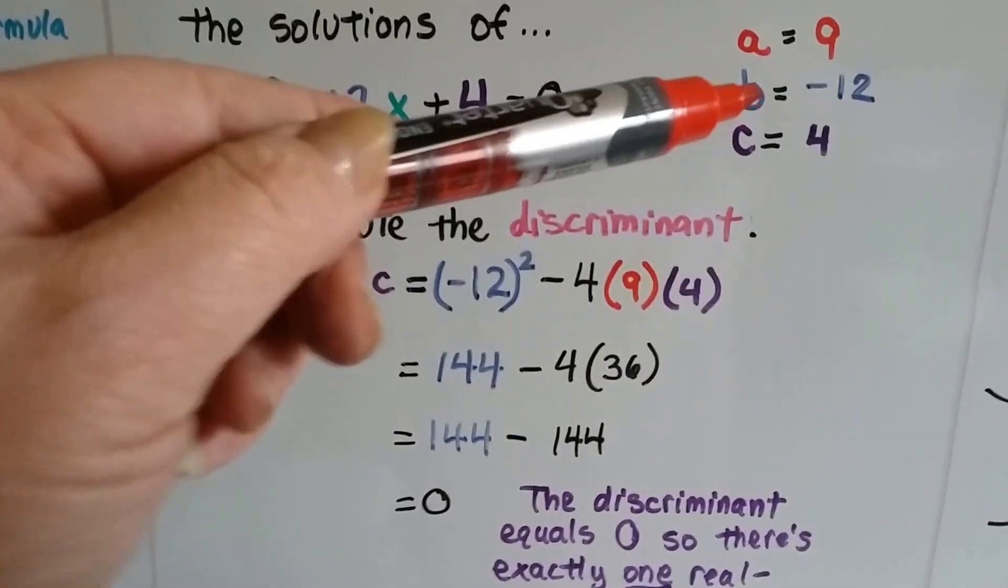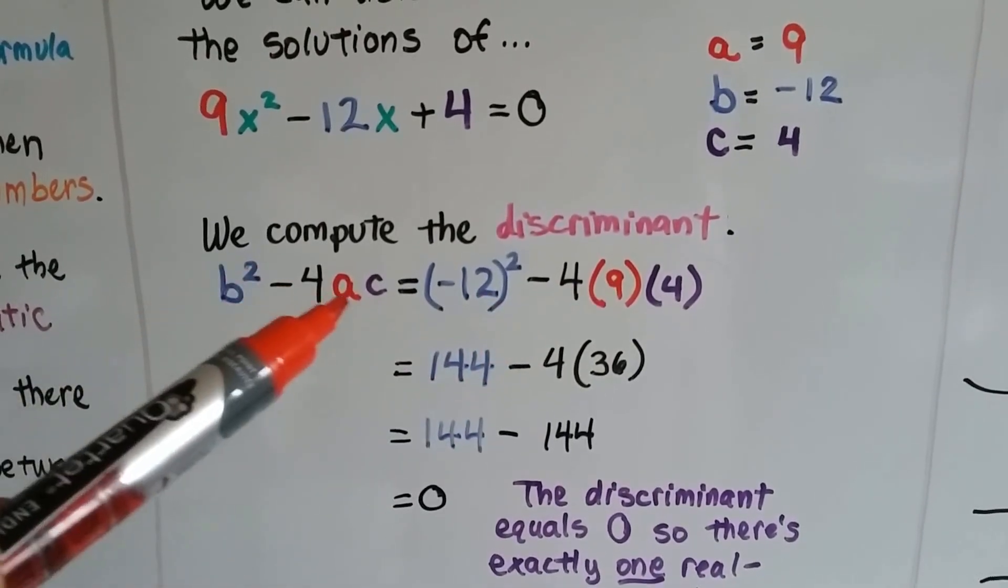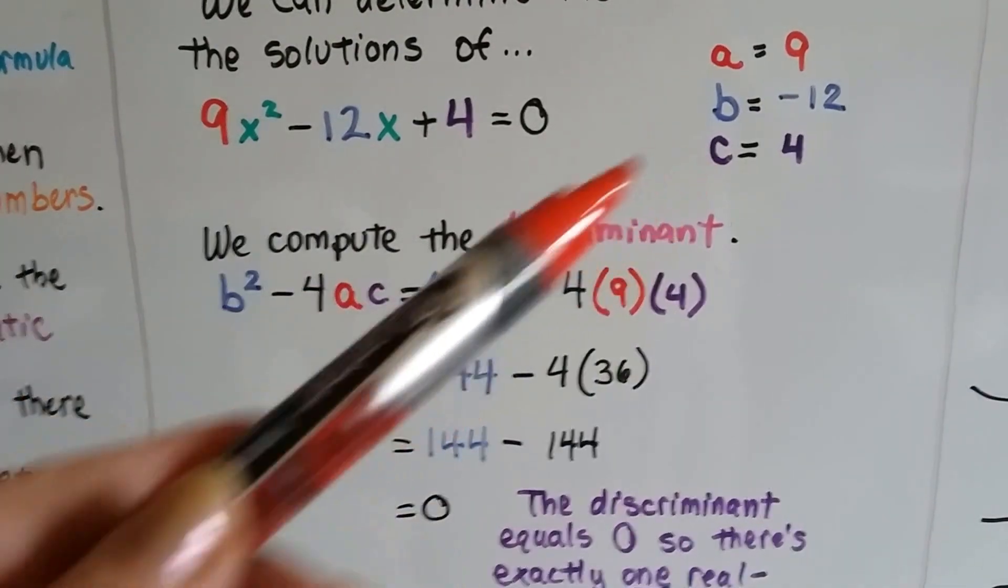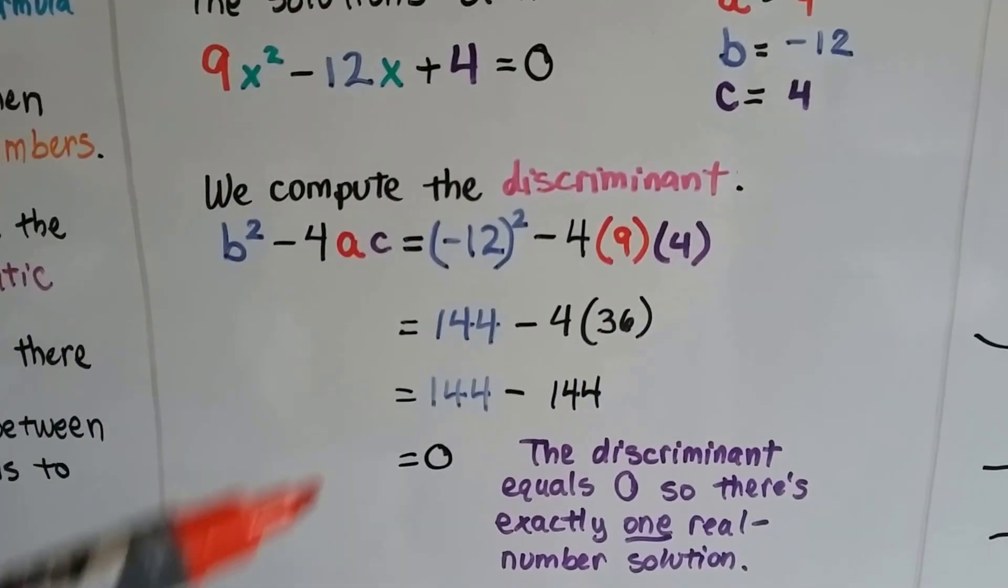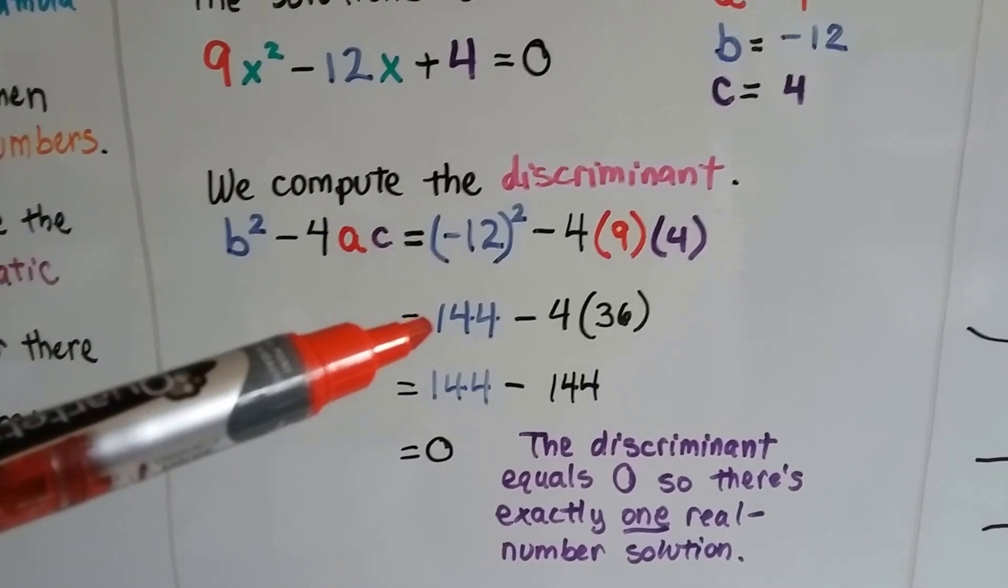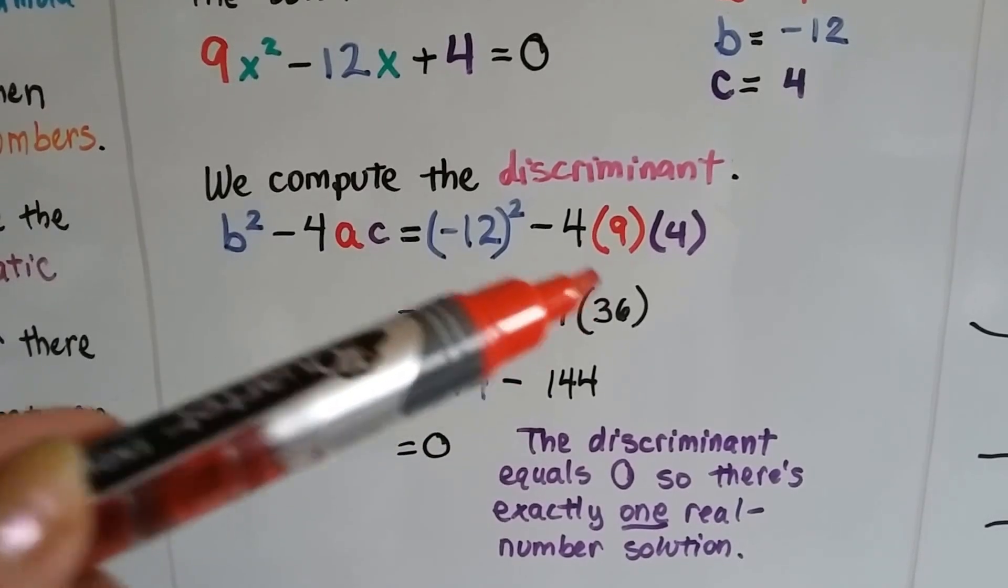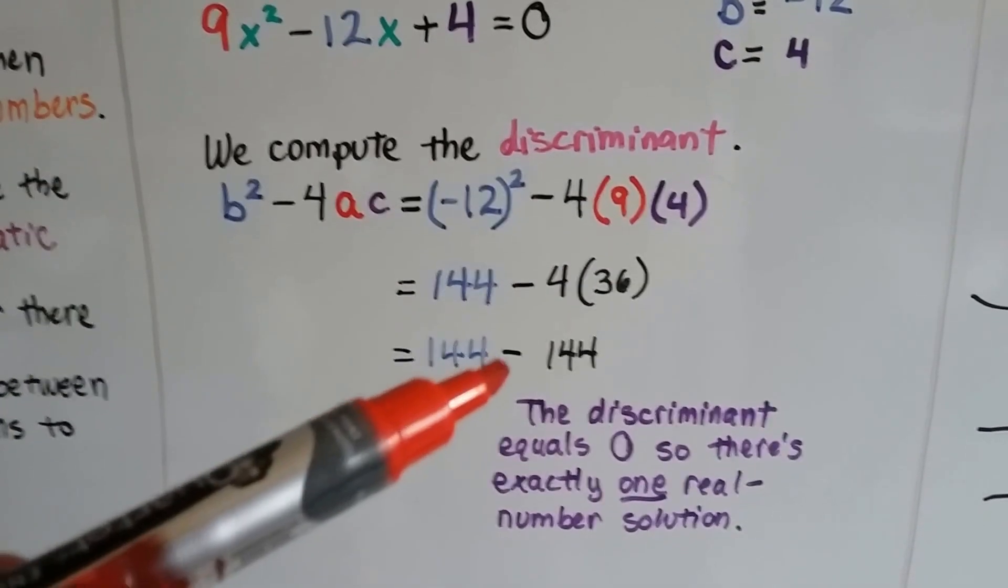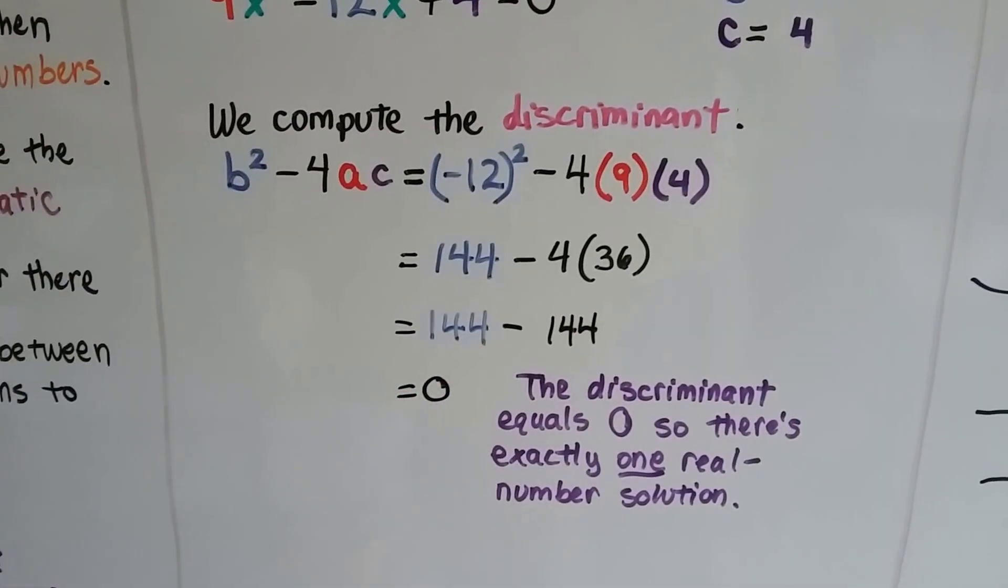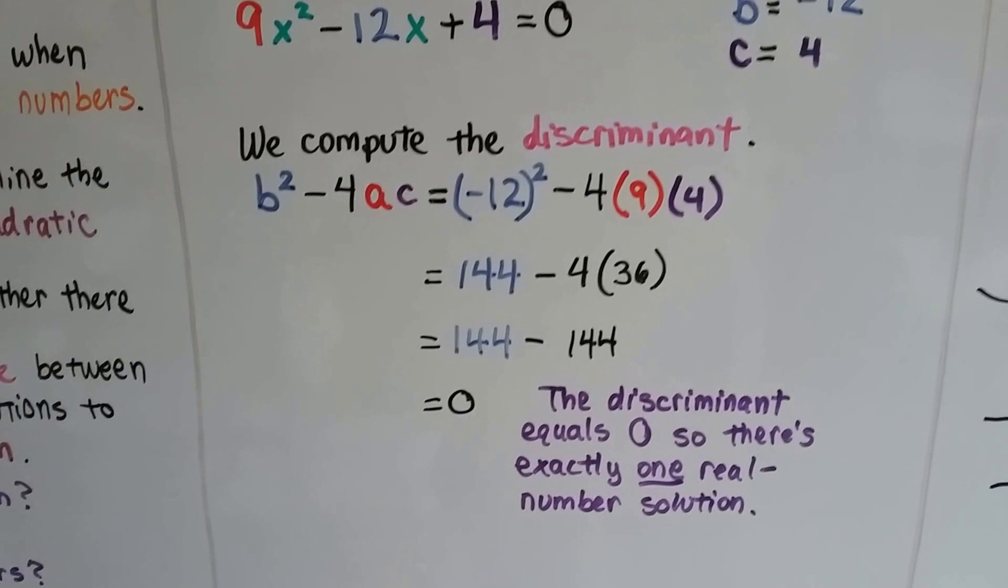Alright, so for b we had a negative 12. So that's going to go here and it's going to be squared. Then we have minus 4, and then we have to multiply a and c. And a is a 9 and c is a 4. So that's going to give us negative 12 times negative 12 is a positive 144. 9 times 4 is 36. Negative 4 times 36 gives us negative 144. So that means it equals zero.